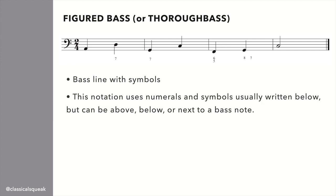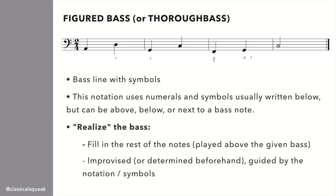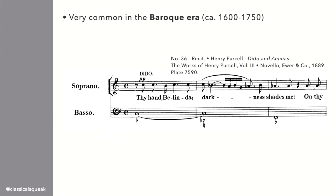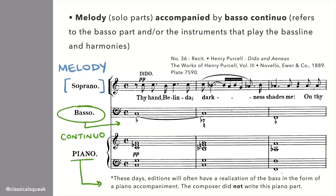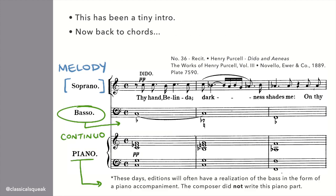You may have seen something like this called figured bass. This notation has numerals and symbols written above, below, or next to a bass note. As someone who plays a keyboard instrument capable of playing chords, I would realize the bass, meaning I would play the bass and add notes on top, which can be improvised or determined beforehand, and all of this is guided by what's written with these symbols. This notation was very common in the Baroque era, roughly 1600 to 1750, where you'd have the melody or solo parts being accompanied by the basso continuo, which would provide the harmonic structure and play the bass line and chord progression.